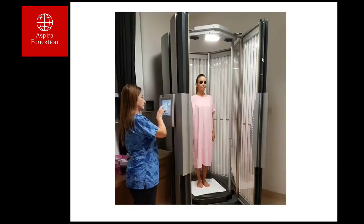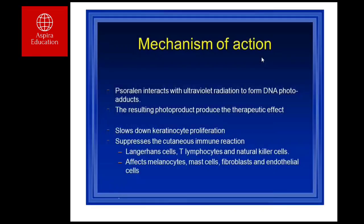In PUVA therapy, the patient takes psoralen and is then exposed to UVA light. Psoralen interacts with UV radiation to form DNA photoadducts, which block DNA replication and slow keratinocyte proliferation. It also suppresses the cutaneous immune reaction by suppressing the activity of Langerhans cells, T lymphocytes, and natural killer cells, and may affect melanocytes, mast cells, fibroblasts, and endothelial cells.